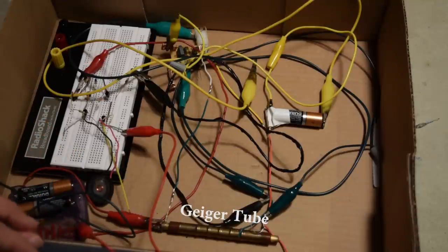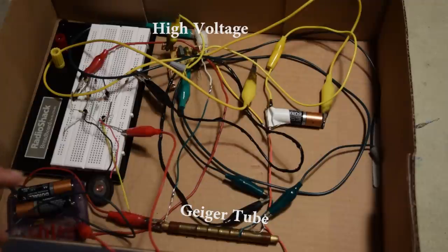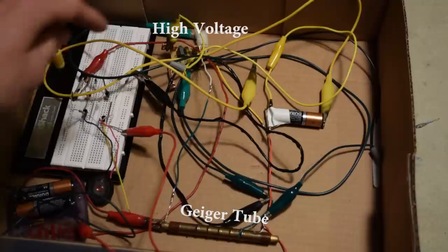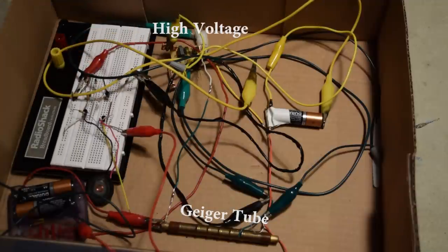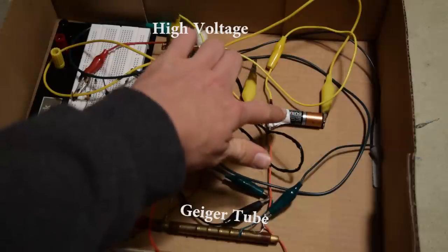The next major component is the high voltage supply. This creates around 300 volts DC and is used to power the Geiger tube. I'm just using a flash circuit from a disposable camera. This runs off of 1.5 volts DC.